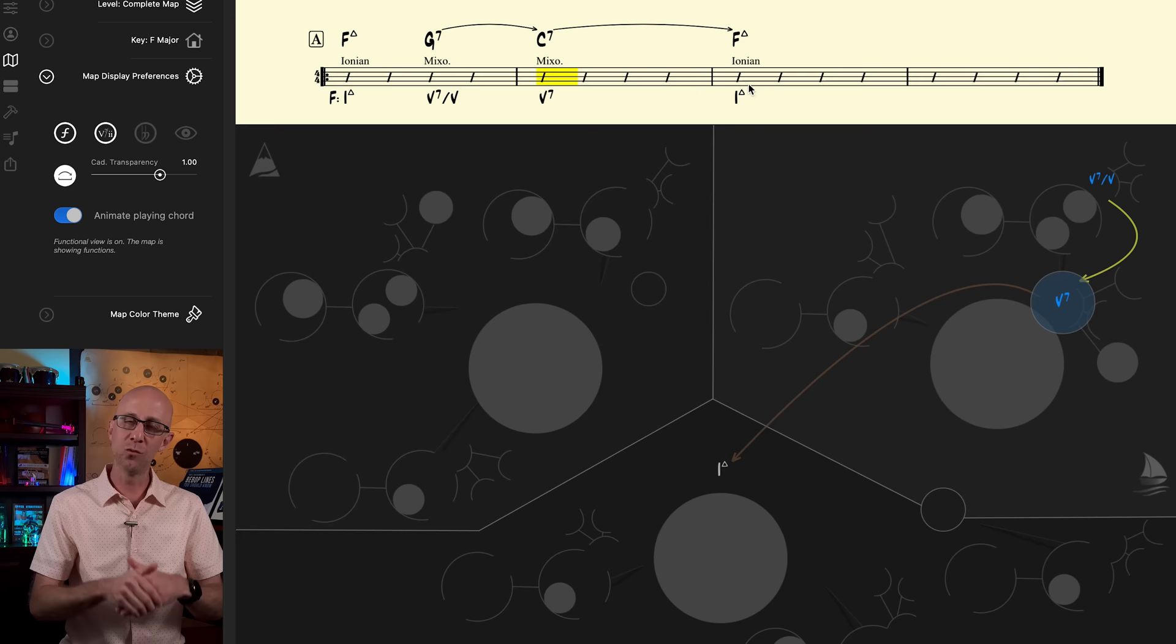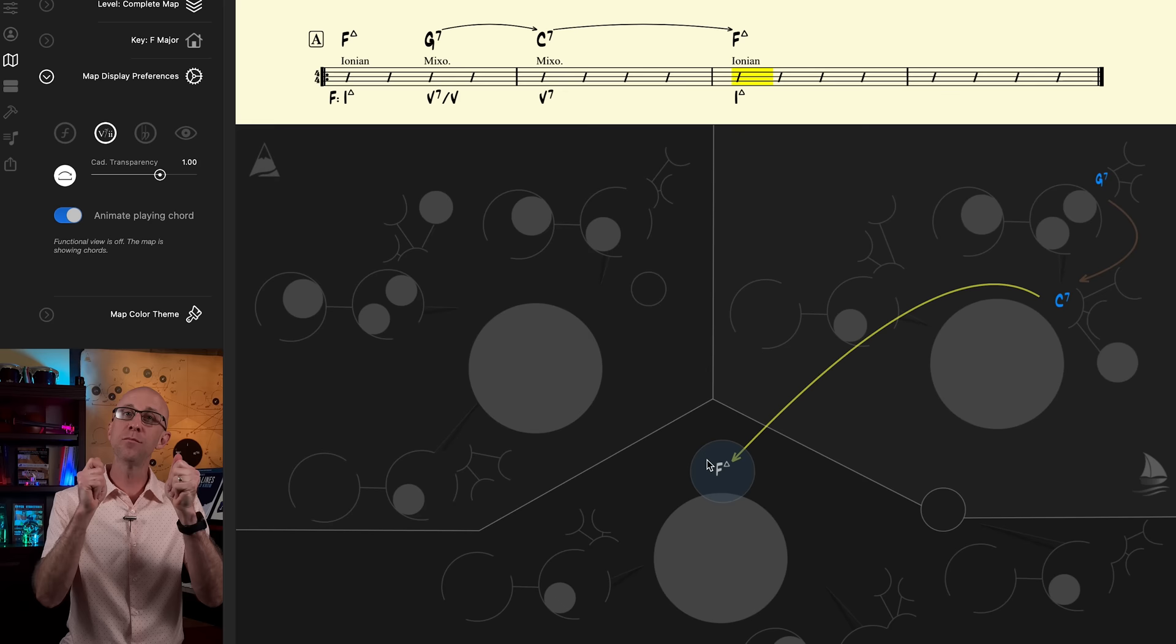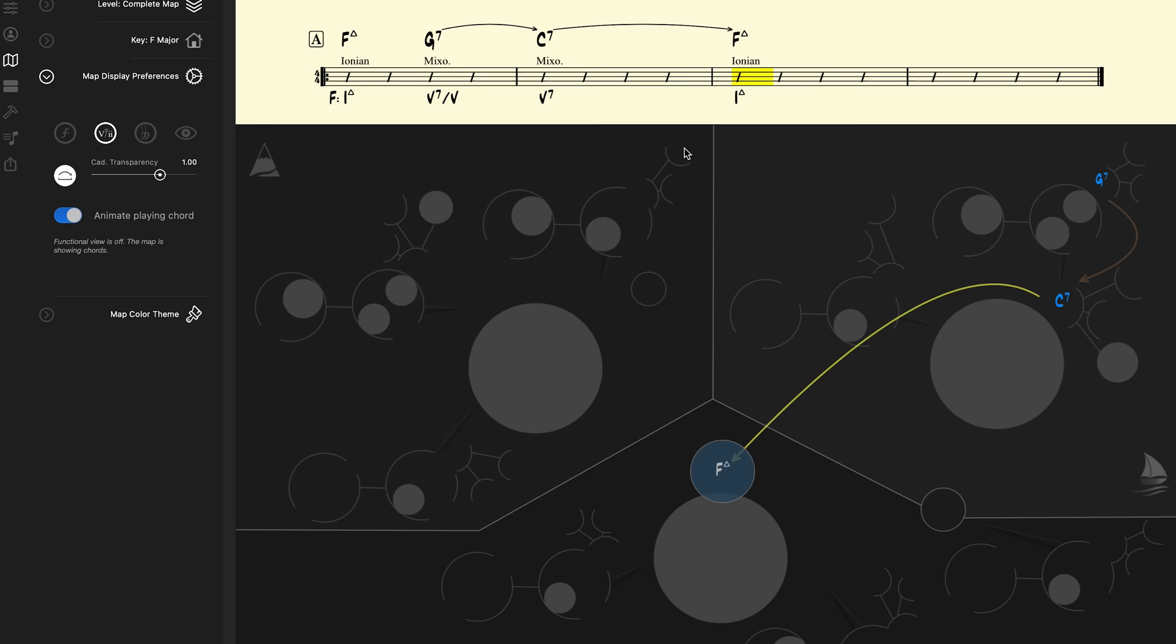This tonicizes the 5 chord, which then resolves to the 1 chord, which in this case would be F. This gives us a standard and effective progression: 1, 5-of-5, 5-to-1.